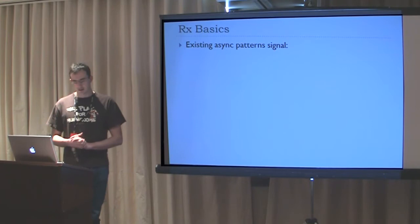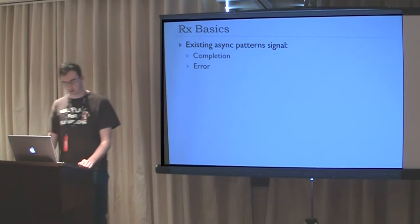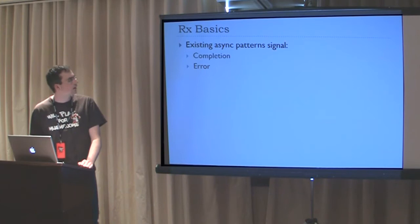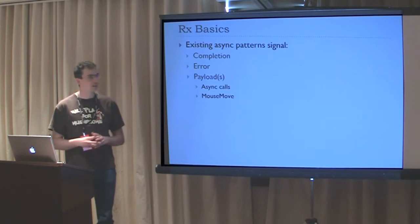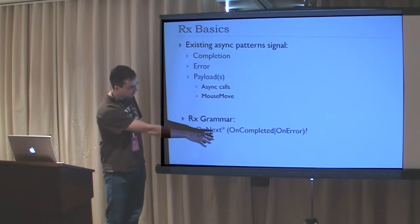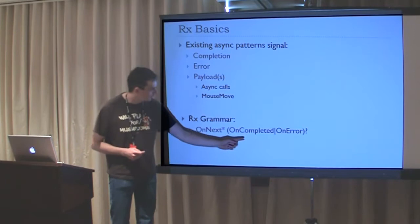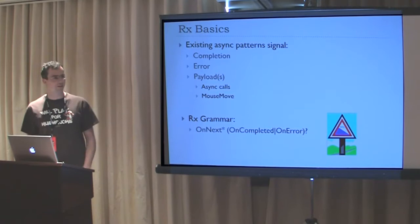Looking at Rx basics, we examined existing asynchronous patterns. All signal some completion when done. Most give you an error through various APIs. Most have a payload - either single in async calls or many in events like mouse move. Rx uses this grammar: zero or more on-next messages (the payload), followed by optional on-completed or on-error message. Notice this can only be one. This is pretty mathematical, but that's the basis.